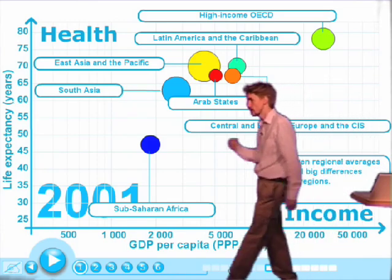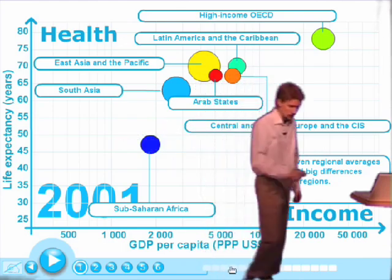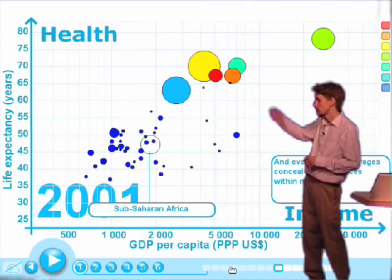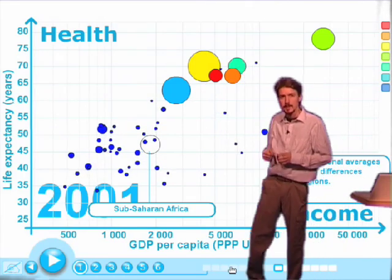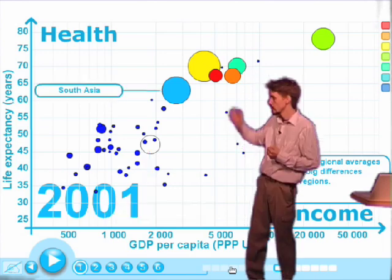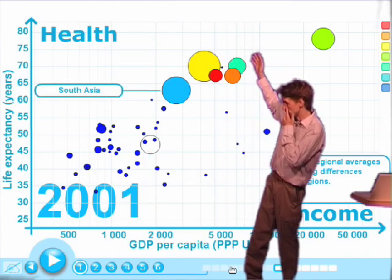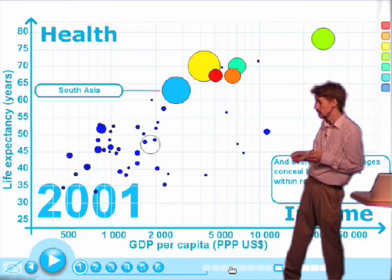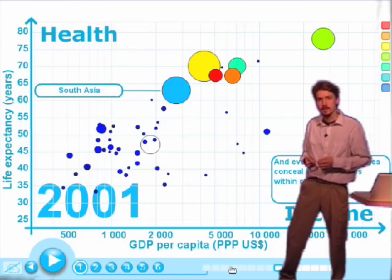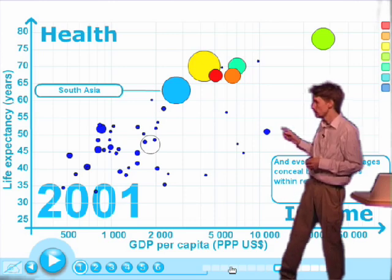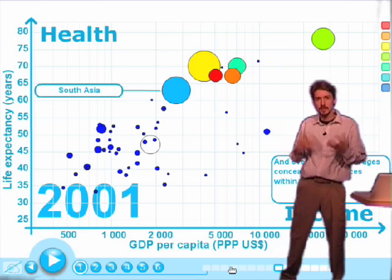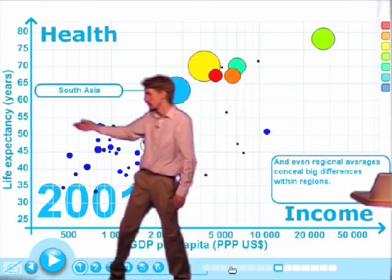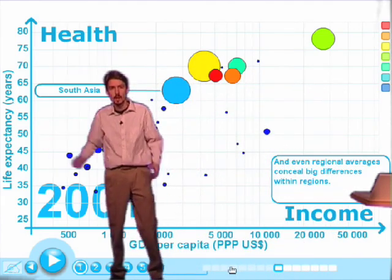Not all African countries are down here in the low corner. Splitting up the region, we can see that Mauritius and Cape Verde up here have very high life expectancy and much more money on average. The richest country in the region is South Africa, which has more money than Latin America or Eastern Europe on average, but its life expectancy rate is only 50 years.